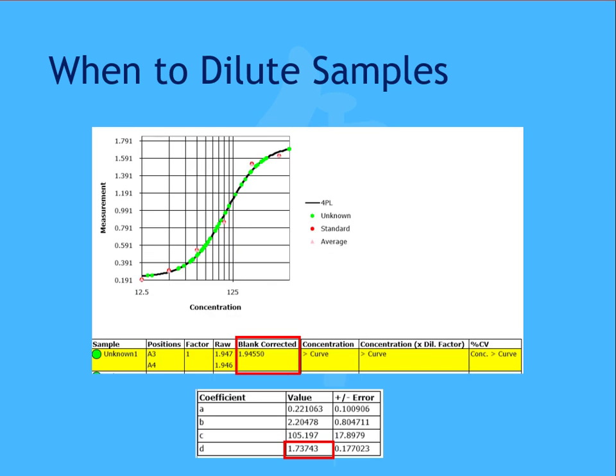For samples with results that cannot be calculated, these have y-axis results, in this case blank corrected, outside the asymptotes of the curve. This example uses a 4PL curve, a commonly used fit method in biological assays. Other curve methods may be in use, but we'll discuss the 4PL curve fit as it's widely used in ELISAs. For a 4PL fit, the y values of the asymptotes of the curve are represented by the A and D parameters. So for this example, you can see the blank corrected value for unknown one is 1.94550, and this is greater than the D parameter 1.73743.